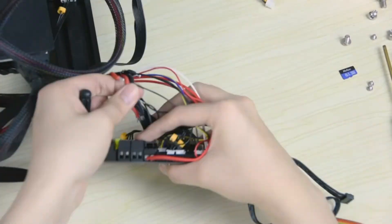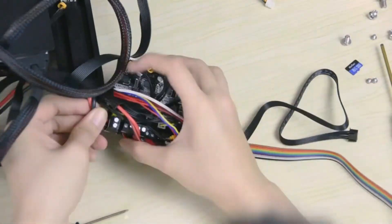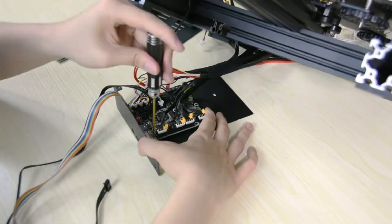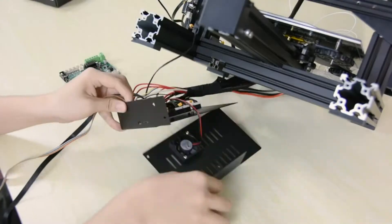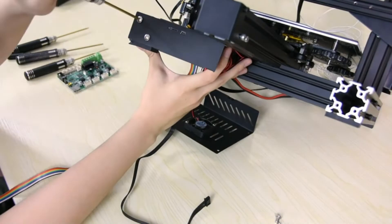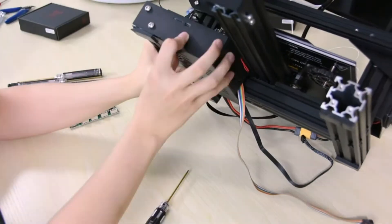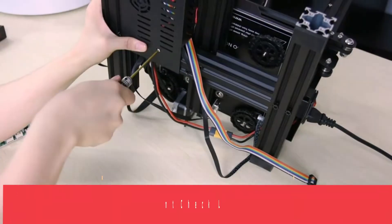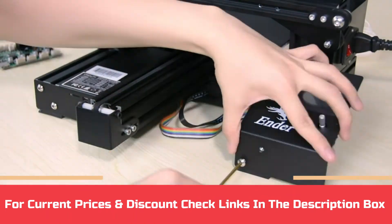To prevent overheating of the printer, this 32-bit 3D printer controller is armed with a CNC fan. You will also love the automatic function support feature in the X, Y, Z, and E motor drive interfaces. For current prices and discounts, check links in the description box.